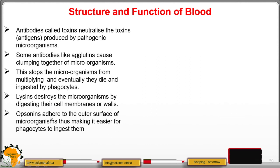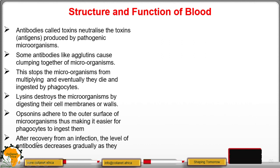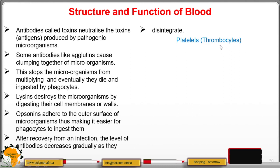Opsonins stick to the outer surface of microorganisms, making it easier for phagocytes to digest them. After recovery from an infection, the level of antibodies decreases gradually as they disintegrate. The other cellular component is platelets.